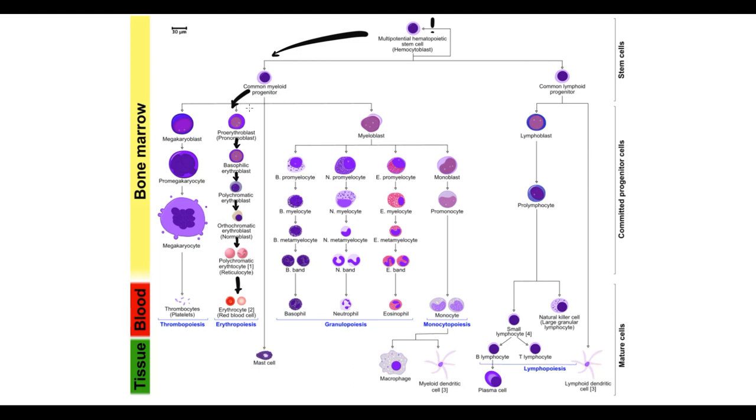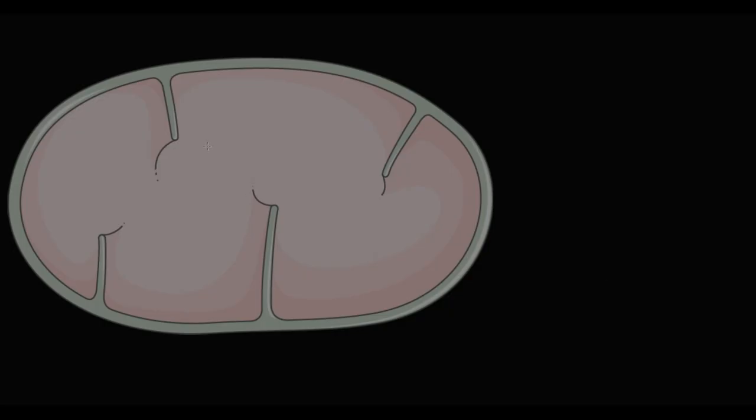The process of heme synthesis occurs at the stage of erythroblast. So when we are talking about heme synthesis, we mean erythroblast. Here we have mitochondria and the cytosol of erythroblast.